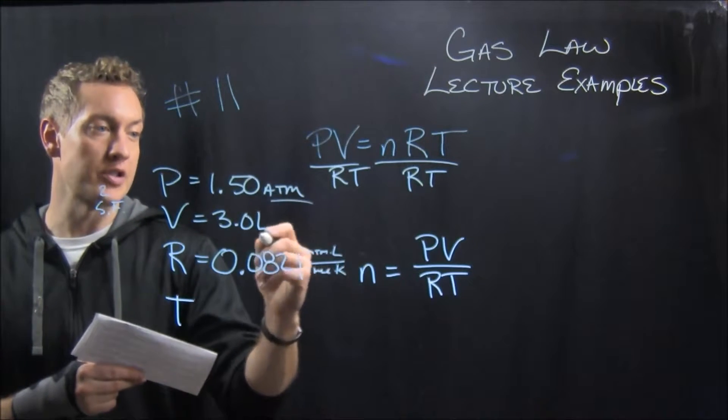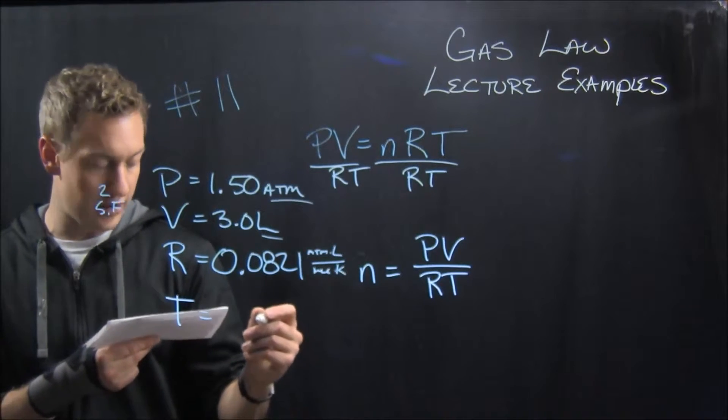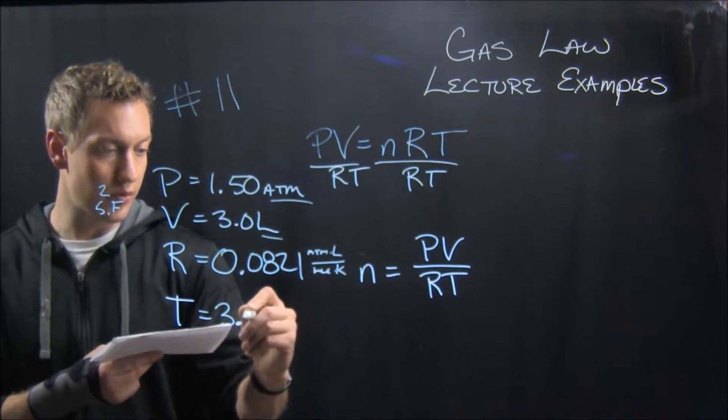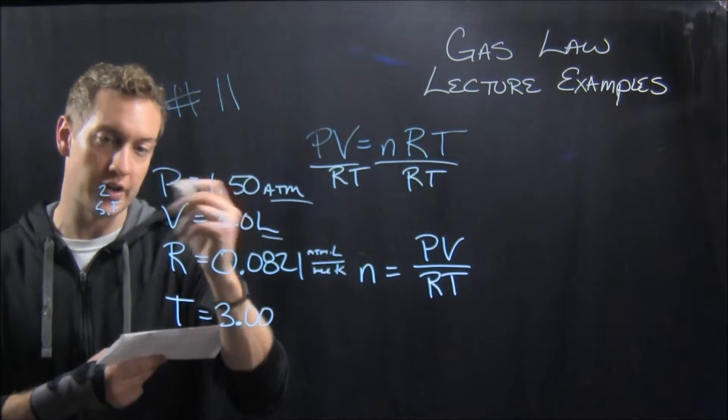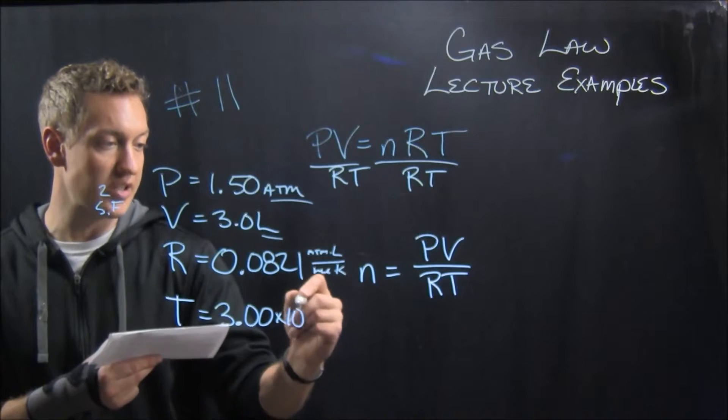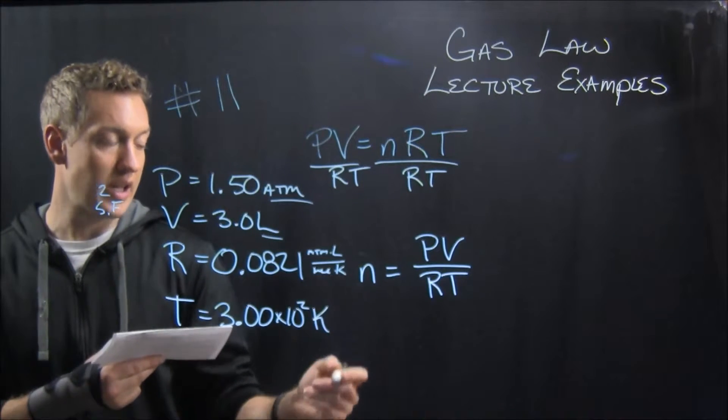And so atmospheres, liters, that's cool. And then temperature will be in Kelvin, and it's 3.00, 3.00, 3 sig figs, but that's, we're rounding to 2 anyway, times 10 to the second Kelvin.